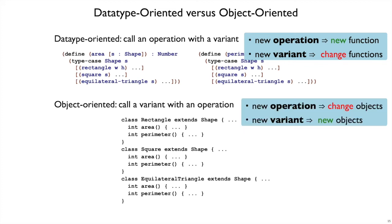With object-oriented organization, in contrast, whenever we add a new operation, we have to change all of the classes or the existing objects to add that new operation there. So if we added scale, then we would have to add a new method to the rectangle class here.